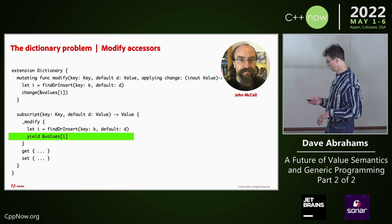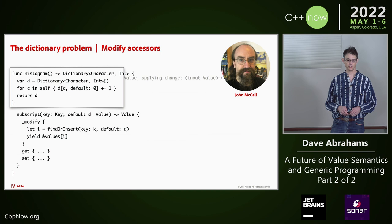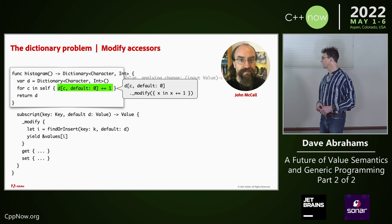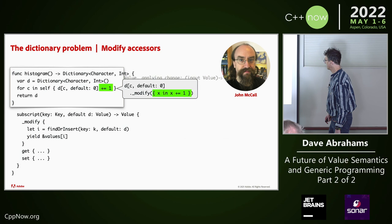Once you've done that, you can get back your original syntax at the source. This generates code where you index the thing and call the modify accessor, and it translates this expression into a closure.